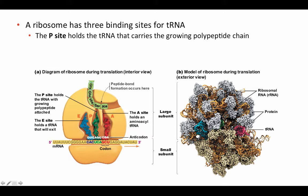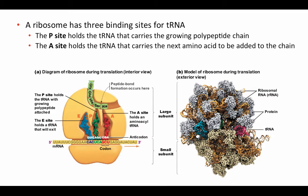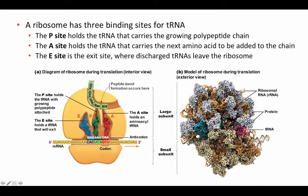One site is called the P site. The transfer RNA at the P site holds the amino acid connected to the rest of the growing polypeptide chain. The A site holds the tRNA that carries the next amino acid to be placed in the chain — it reads the next codon and binds the tRNA with the correct amino acid. Finally, there's an E site — the exit site — where, after the amino acid has been released from the transfer RNA, the tRNA moves to be ejected from the ribosome.